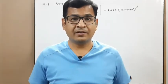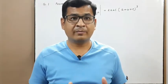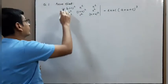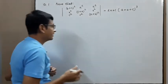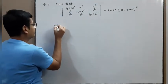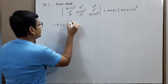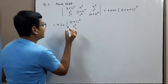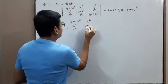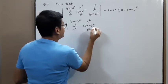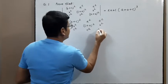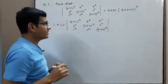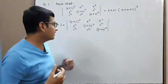Hello students, today we are going to do extra problems based on properties of determinants. Problem number one: prove this equal to this. First write the left hand side. LHS is equal to the determinant with entries (b+c)², b², c², a², (c+a)², c², a², b², (a+b)². First, taking common — if possible, nothing is common.